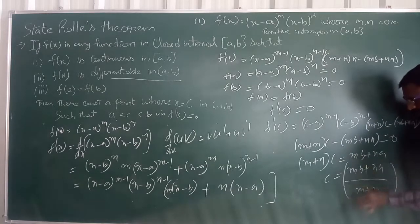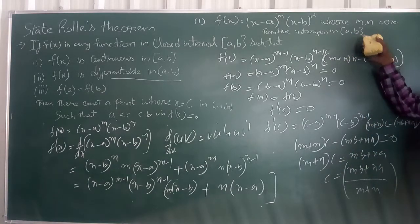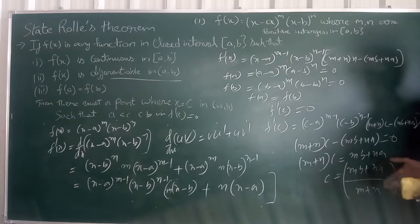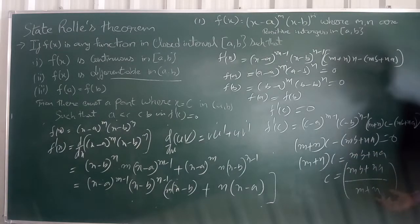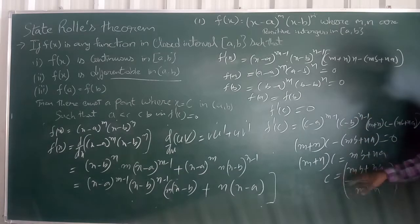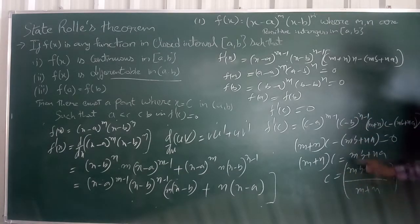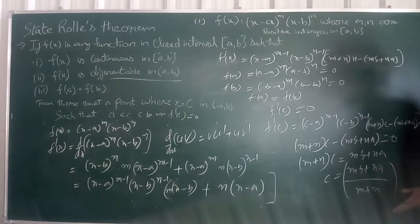This value of c = (mb + na) / (m + n) lies between a and b. You can verify this lies between a and b by taking any real values. Hence, Rolle's Theorem is verified.